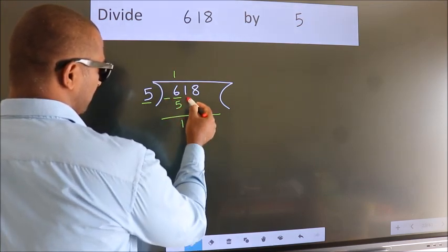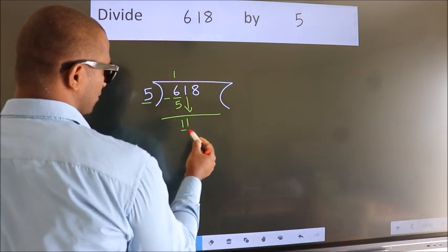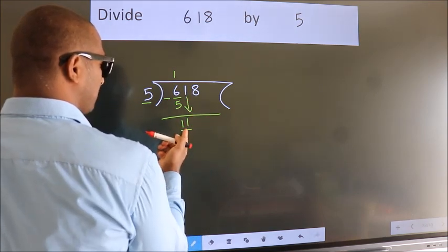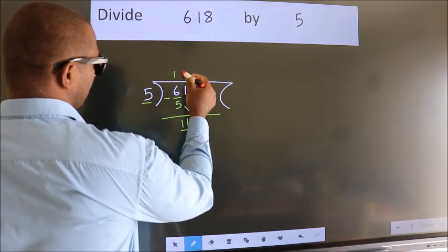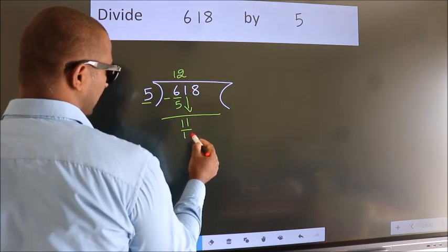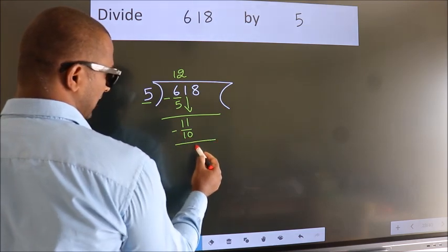After this, bring down the next number. 1 down, so 11. A number close to 11 in the 5 times table is 5 times 2, which is 10. Now we subtract. We get 1.